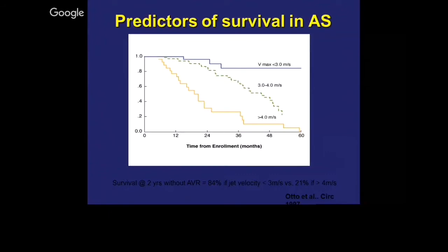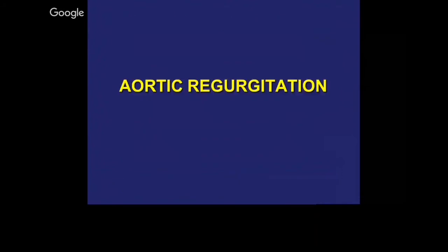For aortic stenosis, the single most important predictor for survival that we have is the velocity across the valve. This landmark study by Catherine Otto showed that survival for patients where the velocity is more than 4 meters per second — at 2 years, if they don't have aortic valve replacement, it's markedly reduced: 21% compared to 84% if it's less than 4 meters per second. So just measuring the peak velocity — if it's more than 4 meters per second — suggests this patient may not do well.